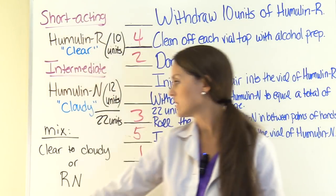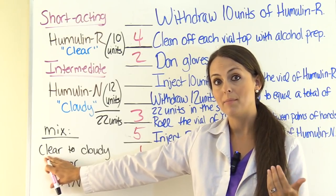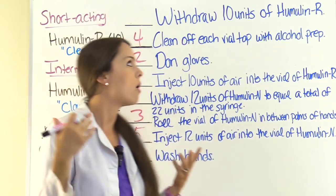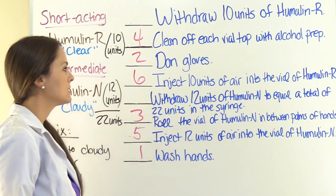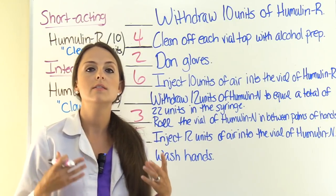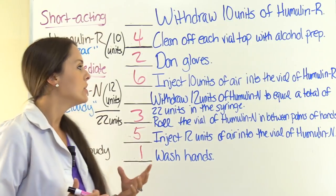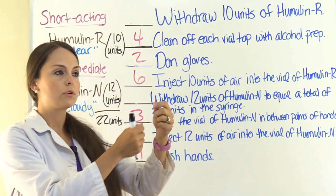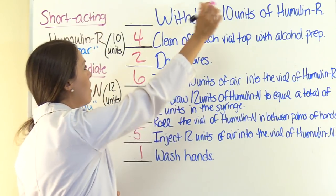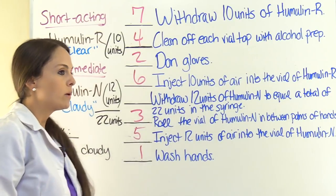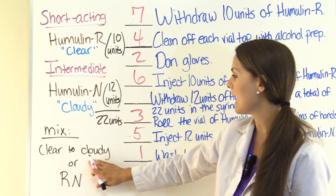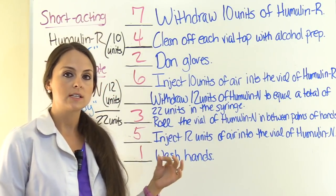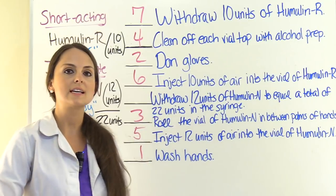Now we're ready to move to the clear vial. We inject 10 units of air into the clear insulin — the Humulin R. That is step six. Now we withdraw the clear insulin first — remember, clear to cloudy. Keep the needle in the vial after injecting the air, invert the vial, and withdraw 10 units of Humulin R. That is step seven. Then withdraw the needle and go to the cloudy solution to withdraw 12 units of Humulin N. The plunger will go to 22 units — our total dose.